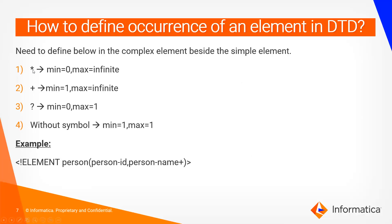How to define the occurrence of an element in DTD. We have four symbols: star (*), plus (+), question mark (?), and no symbol. Star means minimum zero and maximum infinite. Plus means minimum one and maximum infinite. Question mark means minimum zero and maximum one. No symbol means minimum one and maximum one. For example, if I put a star in front of person-id, it can appear zero or more times. If I put a plus, it must appear at least once. If I put a question mark, it can appear zero or one time.